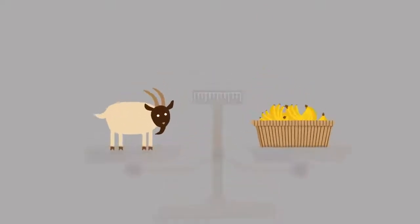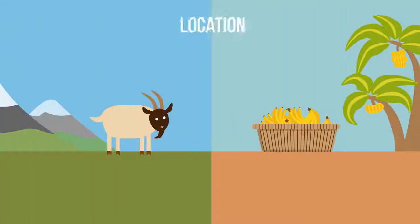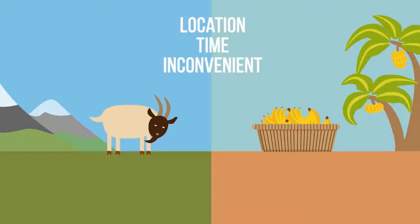The early forms of money, such as a goat or a basket of bananas, were too limited to location and time. Also, the trading was inconvenient.